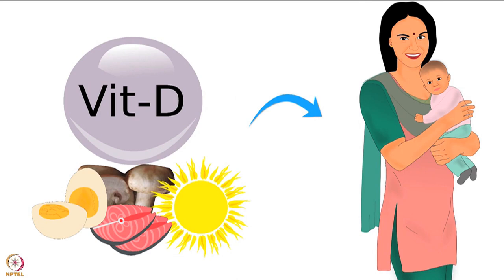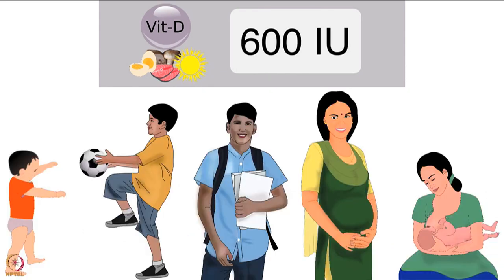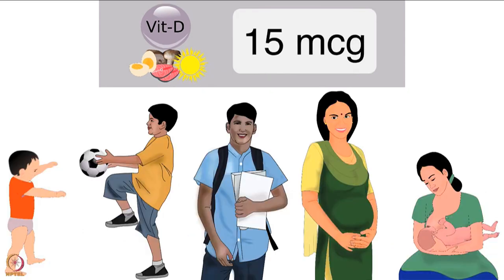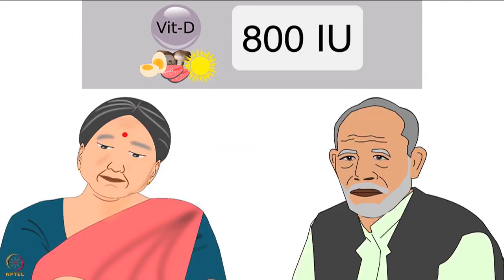To avoid deficiency, adequate vitamin D intake is important. For infants 0–12 months, 400 international units (IU) or 10 micrograms per day is recommended. For people aged 1–70 years — including children, adolescents, adults, and pregnant and lactating mothers — 600 IU or 15 micrograms per day is recommended. For men and women above 70 years, 800 IU or 20 micrograms is recommended. Many experts recommend much higher doses.